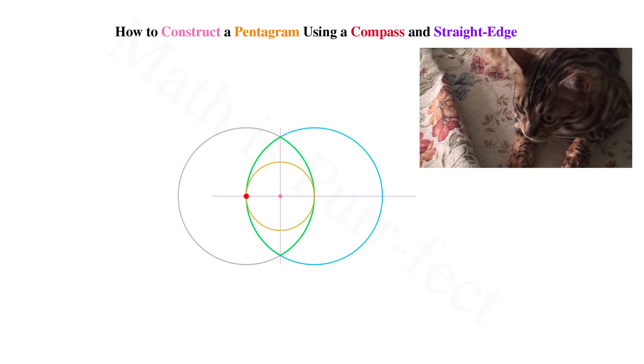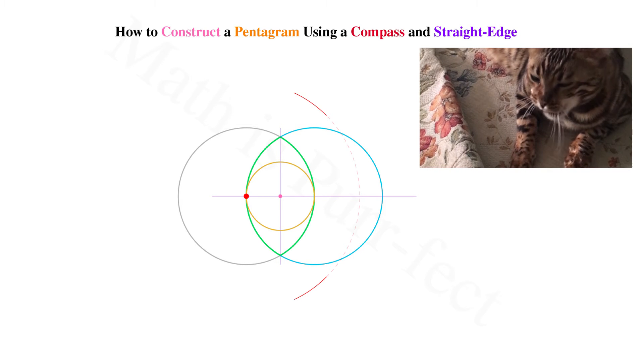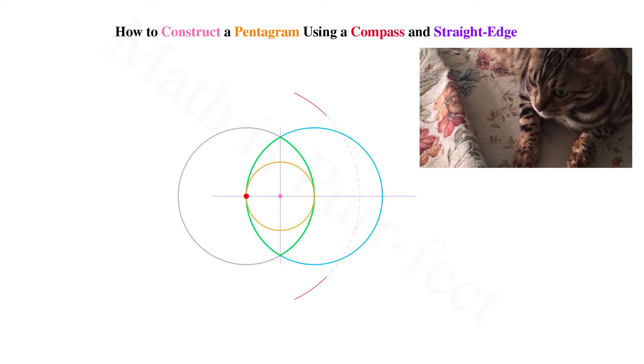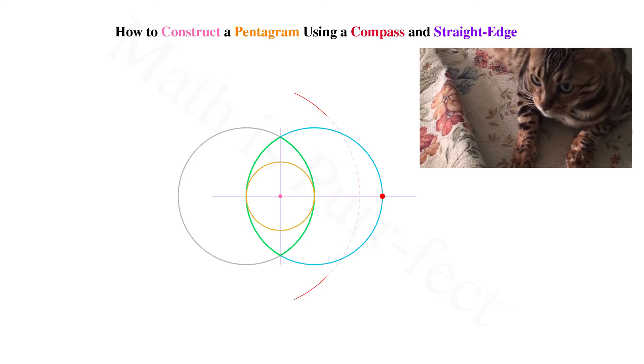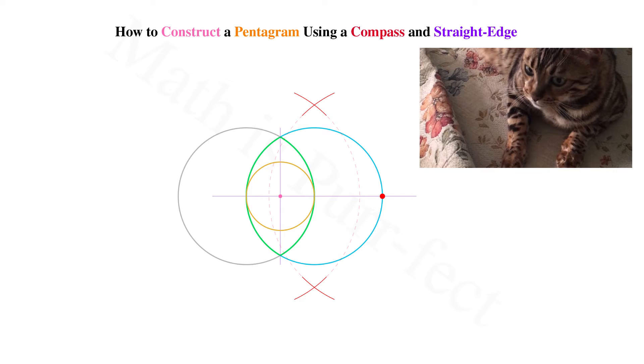We then open the compass to about two-thirds of the diameter of the original circle and draw an arc, emphasizing the arc above and beneath the circle. We then keep the compass on the same setting and do the same on the opposite side of the circle.